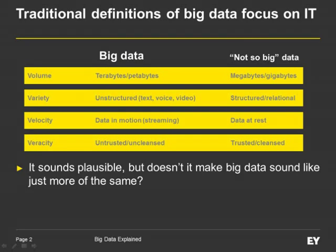Where I'm going to start is the closest thing there is to a standard definition of big data — the three, or depending on what you count, four Vs. This standard definition says that you have big data when you have challenges that can't be handled by traditional database systems. Those challenges are driven by some combination of four factors. The first, and probably the most basic, is volume. When you have a lot of data, you have big data. How much? More than you can handle with your existing system. If this seems a bit circular, hang in there — it gets worse.